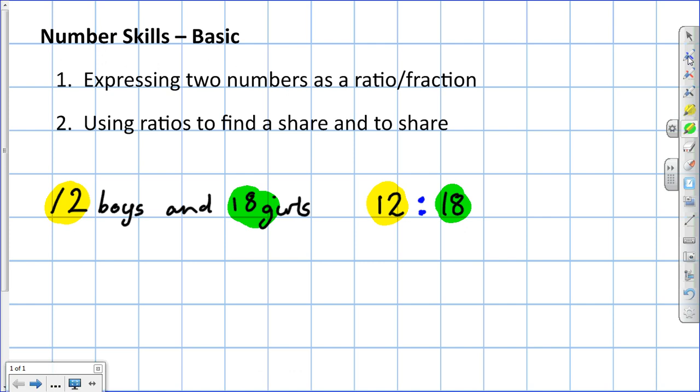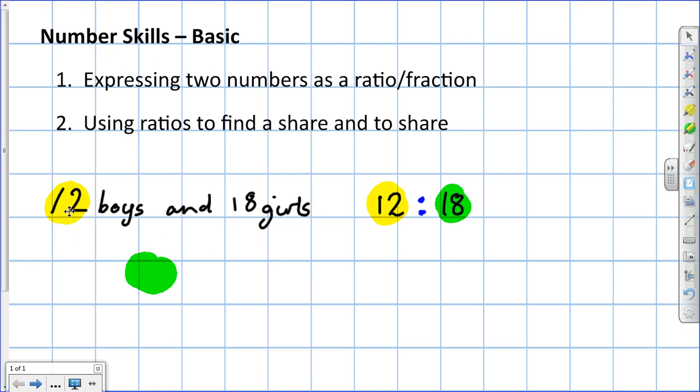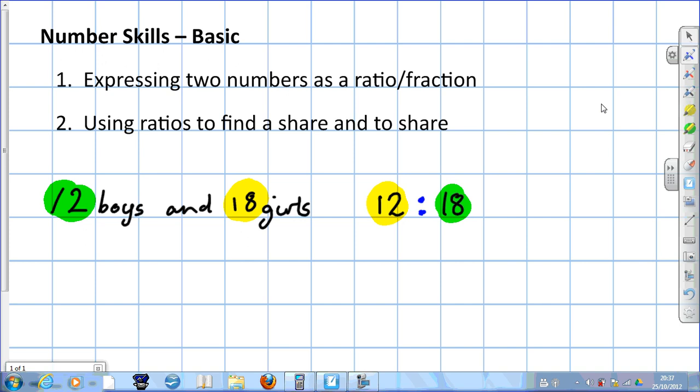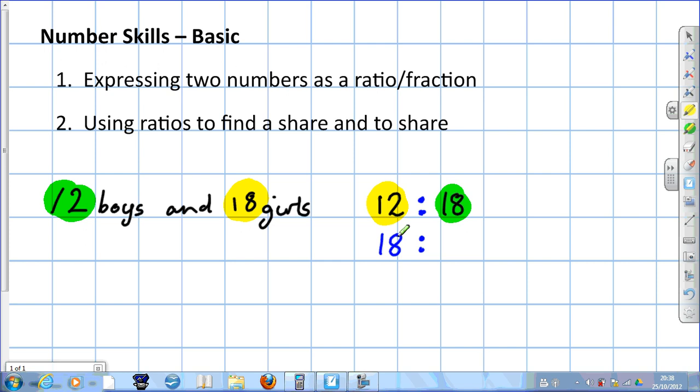Let's say the question had been worded this way. It asked you for the ratio of girls to boys. The secret is in the wording of the question. The first word used was girls, so the ratio of girls to boys is 18 to 12.